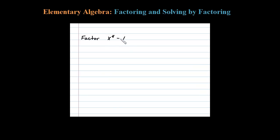To factor this binomial, I notice it's a difference of squares. Difference of squares can be factored: a squared minus b squared can be factored as a plus b times a minus b. So it's just a matter of determining what a and b are.